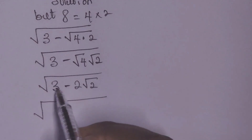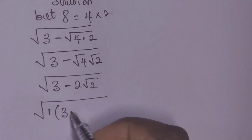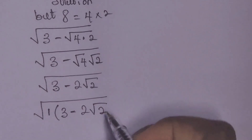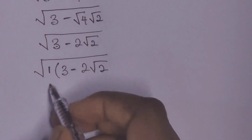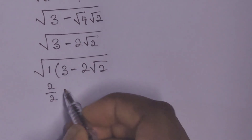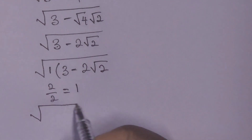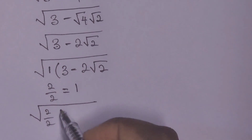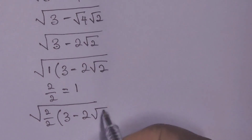This will now give us root 3 minus 2 root 2. We factor out 1 from here, so we have 1 times 3 minus 2 root 2. From here, we can replace this 1 to be equal to 2 over 2, which is the same thing as 1. So we have 2 over 2 times 3 minus 2 root 2.